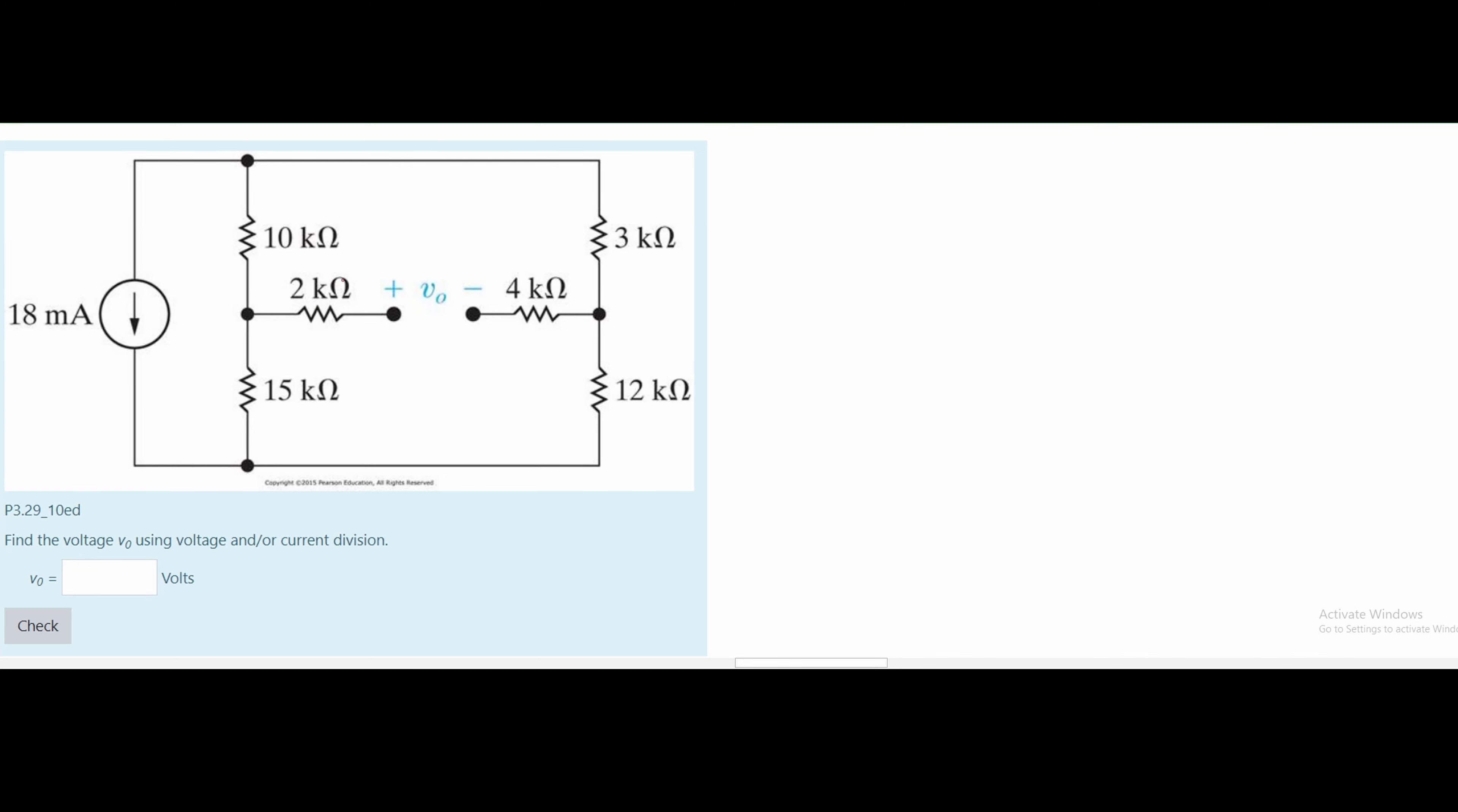For starters, we have to know that this 2kohm resistor and this 4kohm resistor are not going to have any current passed into it because they don't go anywhere. They just stop here, so there's no current that will pass through because there's nowhere for the current to go. That means these basically won't matter in our circuit analysis.